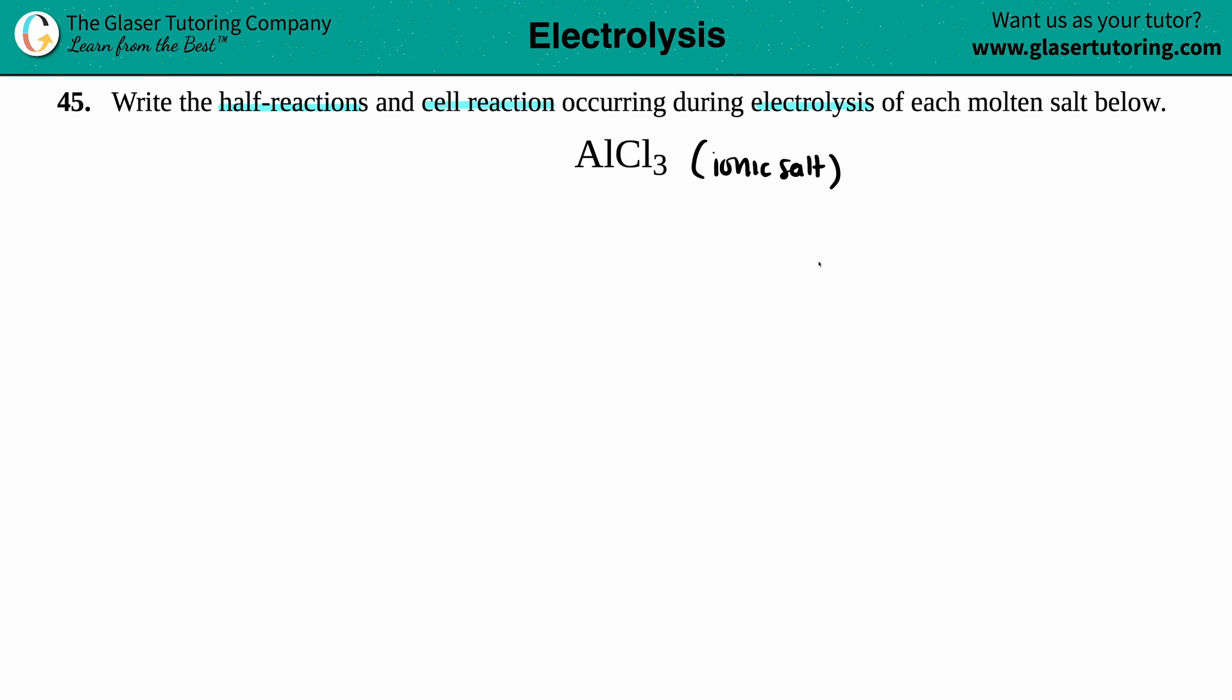In order to do this problem, remember salts, ionic compounds, they have positive and negative charges. So we're going to break down this compound into its positive and negative ion. Aluminum goes first and then chlorine. You can use those subscripts to figure out what the charges are. This one will crisscross up telling me that chlorine is negative one, and the three crisscrosses up to aluminum telling me that aluminum is plus three.